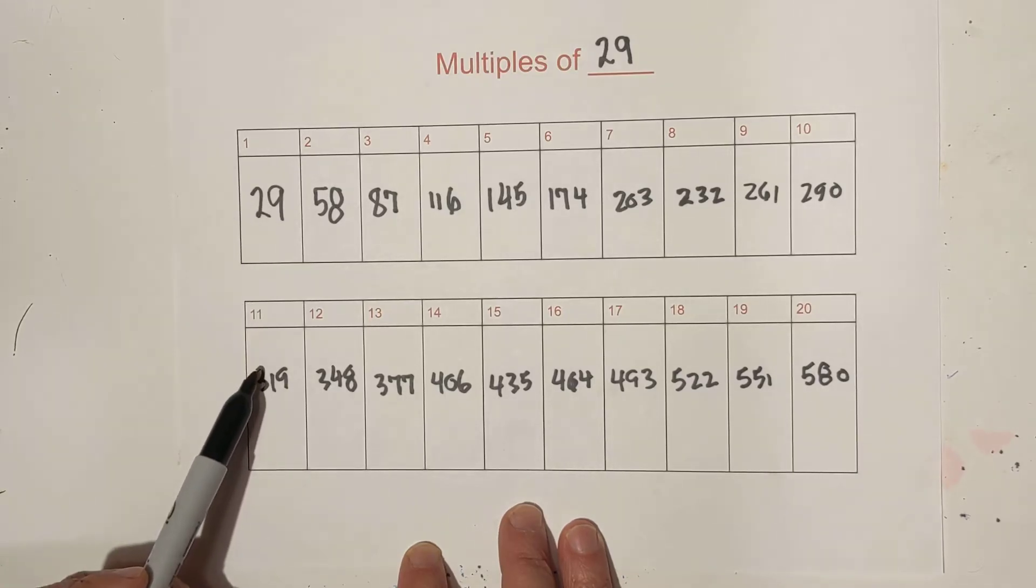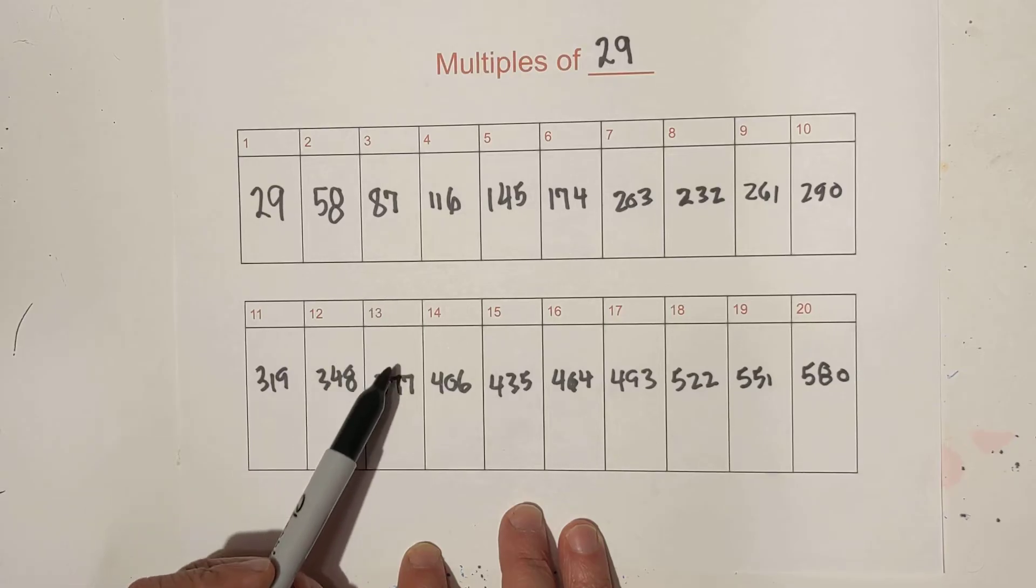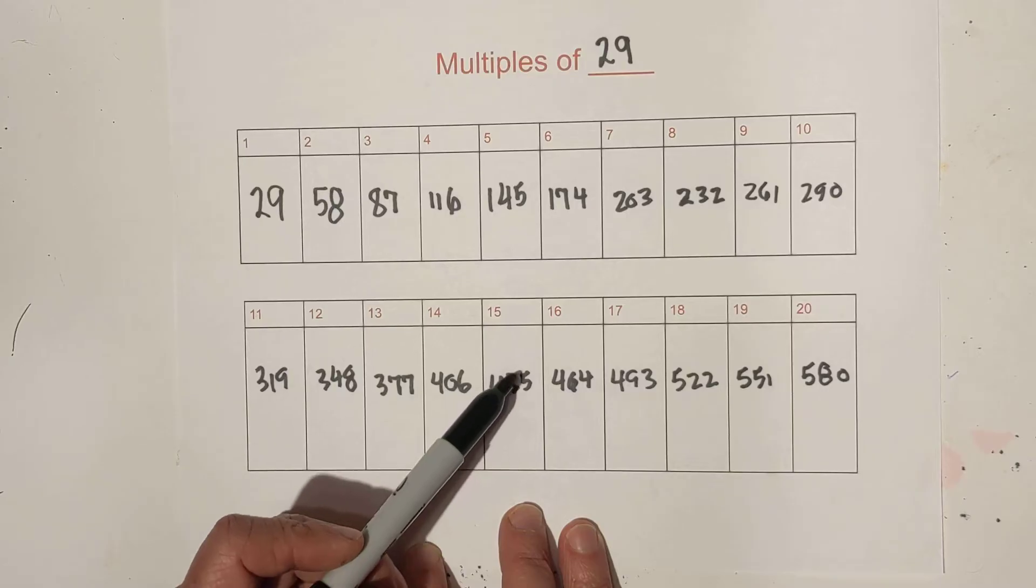11 times 29 is 319, 12 times 29 is 348, 13 times 29 is 377, 14 times 29 is 406, and 15 times 29 is 435.